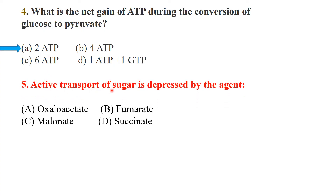Active transport of sugar is depressed by which agent? Active transport is the movement of sugar molecules from low concentration to high concentration. Phlorizin (melanoid) suppresses the active transport of sugar.